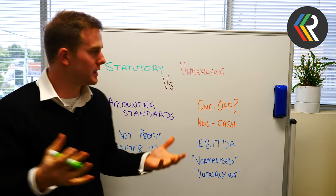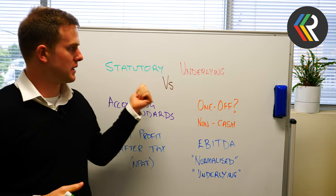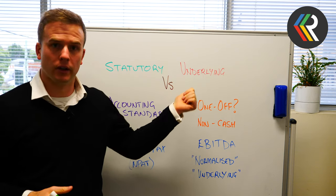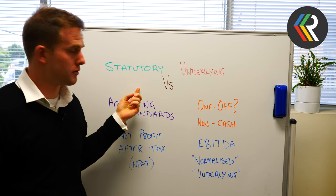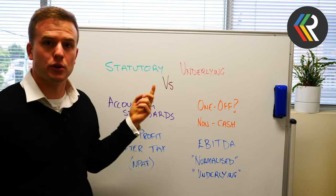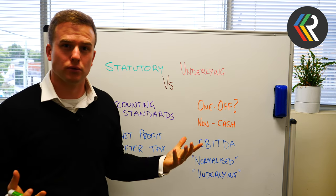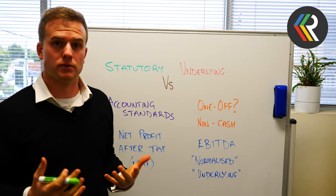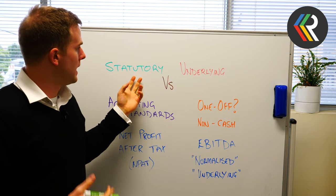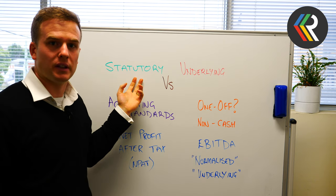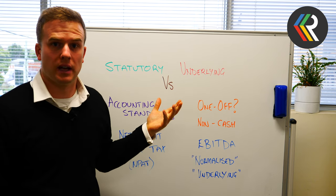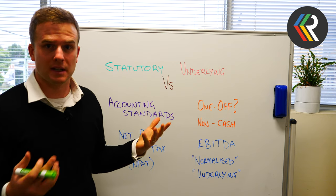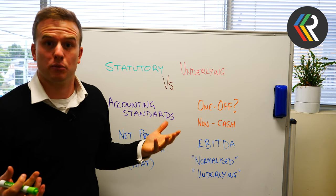So firstly, when would you see these two terms — statutory or underlying? When you see statutory results, it means you're looking at a financial report or financial statement and you're seeing something that is in line with accounting standards or commonly accepted accounting principles.